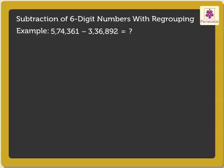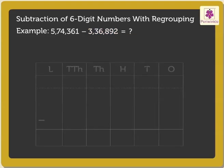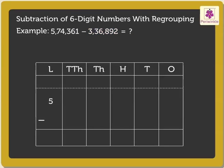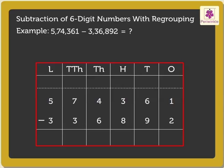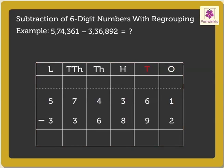Let us subtract the 6-digit numbers 5,74,361 and 3,36,892. Write the numbers 5,74,361 and 3,36,892 in the place value chart, i.e., in the ones, tens, hundreds, thousands, ten-thousands, and lakhs columns.